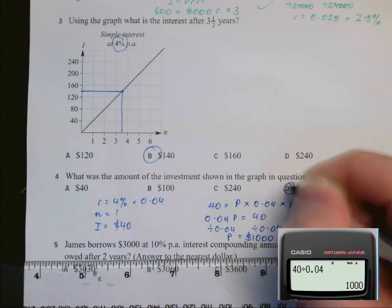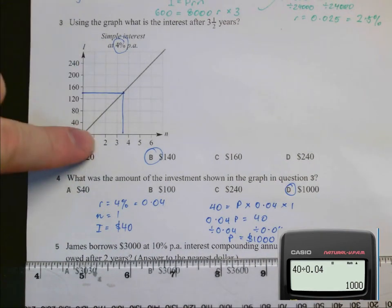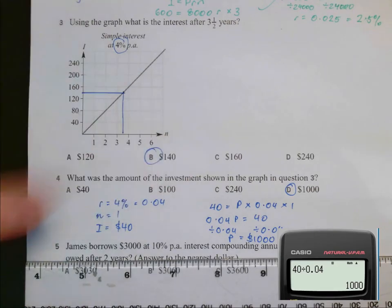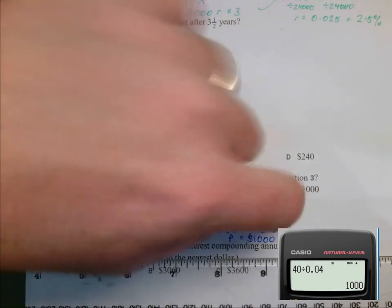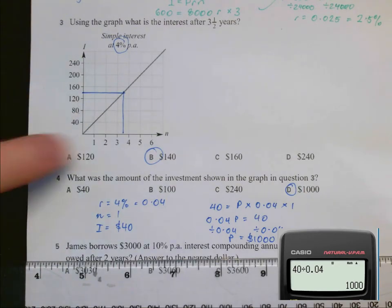There are other ways to do this. One way would be to work out 4% interest for one year on each of these numbers and see which one gives us $40 for one year.